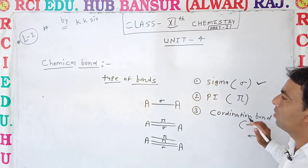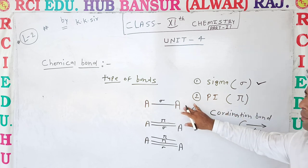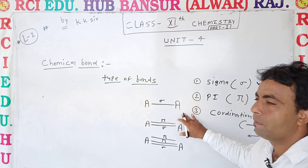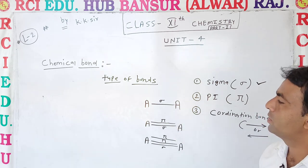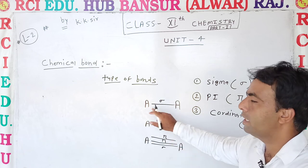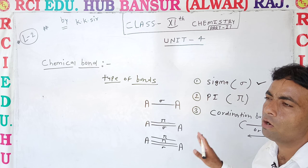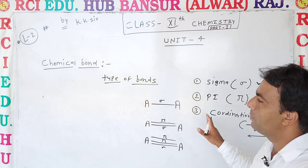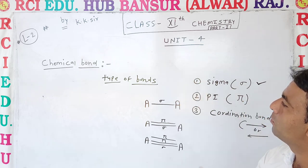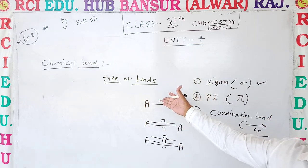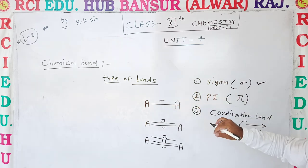There will be formation of bonds depending on the type of atoms — it may be same type or different type. On the basis of this, the compound may be mono, di, tri, penta, hexa, octa, etc. Today we saw the definition of chemical bond, and the types of bonds: sigma, pi, and coordination bonds.